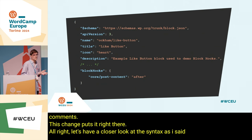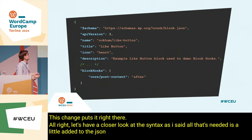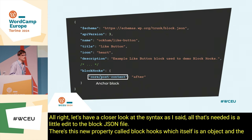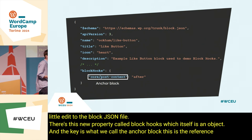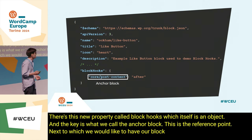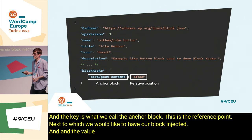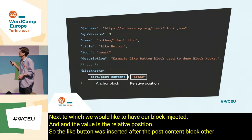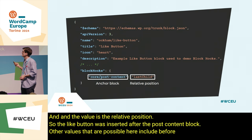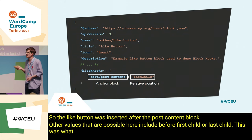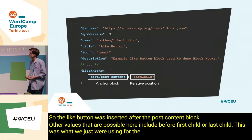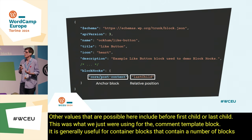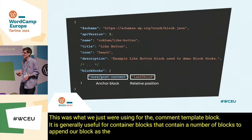All that's needed is a little addition to the block.json file. There's this new property called block_hooks, which itself is an object. The key is what we call the anchor block — this is the reference point next to which we would like to have our block injected. And the value is the relative position. So the like button was inserted after the post content block. Other values that are possible include before, first_child, or last_child. This is generally useful for container blocks that contain a number of blocks, to append our block as the first or last block respectively.